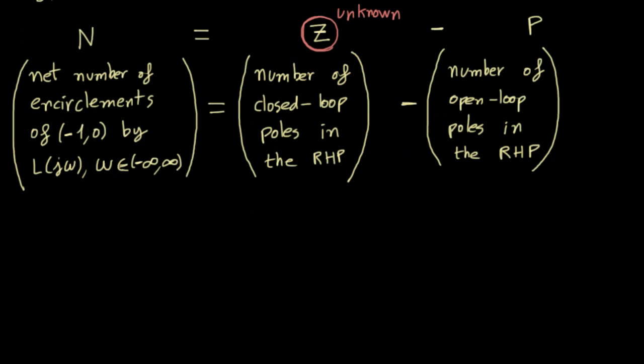Recall that the unknown in this equation is z, the number of unstable closed loop poles. Remember also that our purpose is to keep that number equal to zero throughout the design process, in which we will be shaping L of j omega.